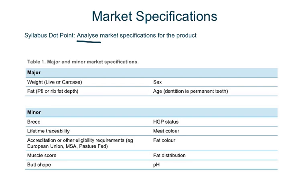Market specifications are the requirements to enter particular markets and are determined by what consumers and processors actually value the most. For beef cattle, there are major and minor specifications. The major ones are weight, which is usually carcass weight, fat, sex, and age.